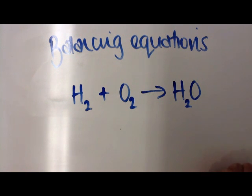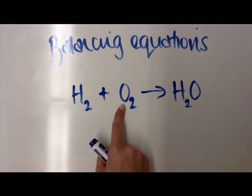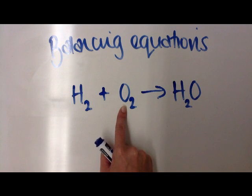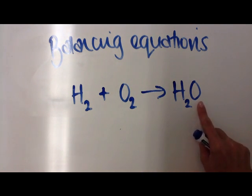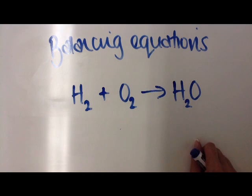In our universe nothing can be created, nothing can be destroyed. It only gets changed into something else. So we can see that the equation's not balanced. I've got two molecules of oxygen bonded together covalently here and then it looks like I've only got one atom of oxygen on the right hand side. So therefore we have to balance the equation.